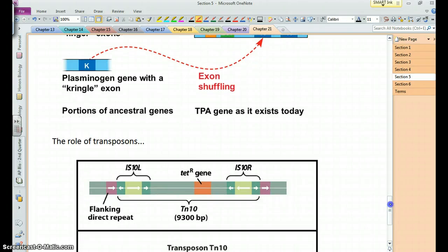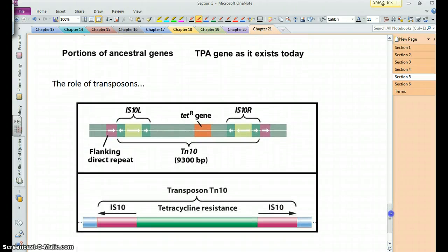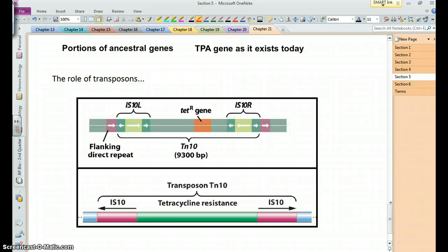The transposons we talked about previously, they also play a role in gene duplication, because as we said, a transposon basically makes a copy of itself and then goes elsewhere in the genome. Well, you can have these situations where you've got two transposons here, and you've got this gene in between them, and what can happen is the transposons can kind of work together, you might say.